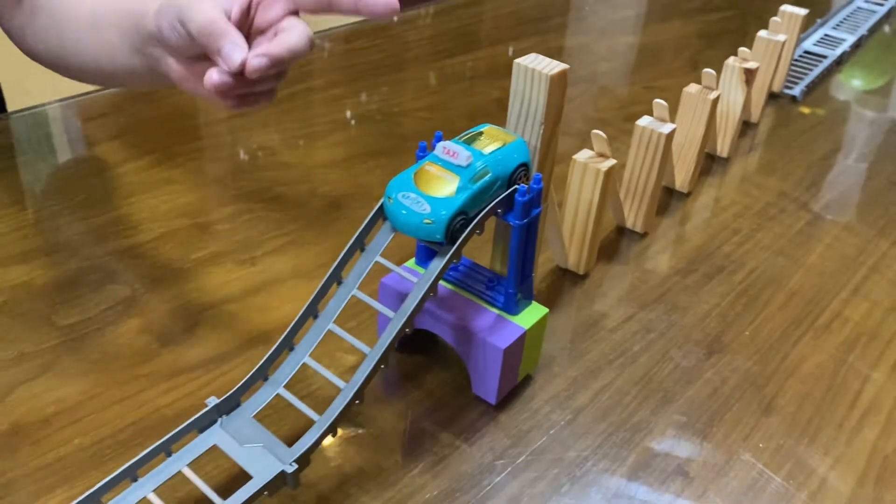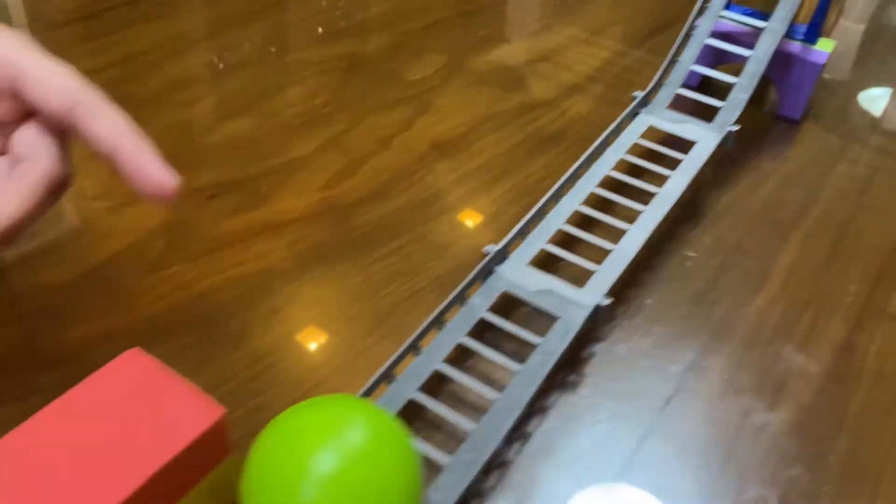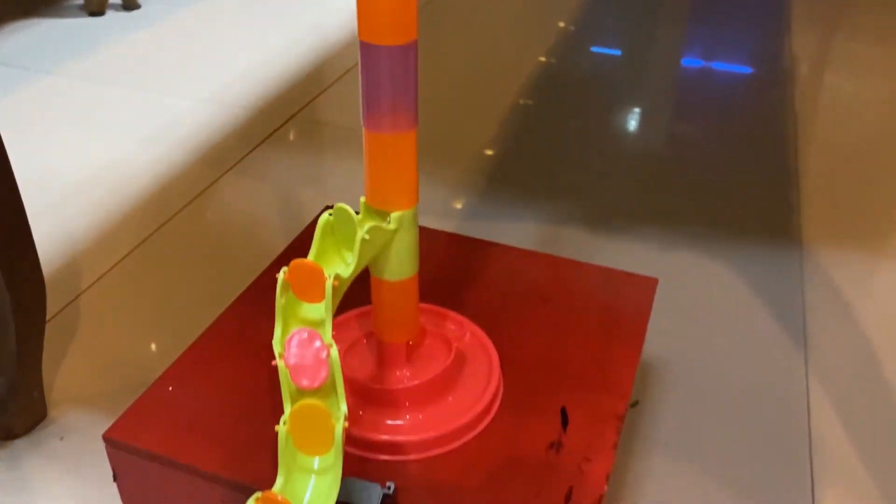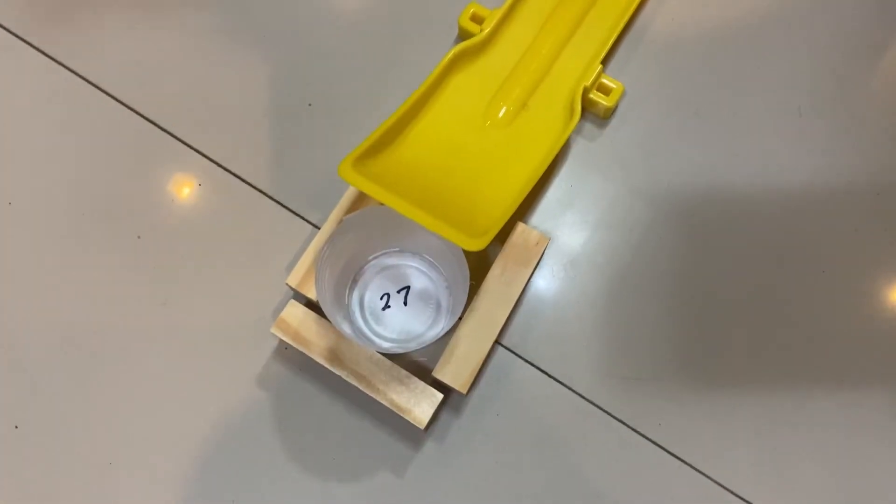The Jenga pieces will hit the car, go down the racetrack, hit the green ball, hit the yellow ball, go down here to the racetrack and onto the yellow slide and outside the Jenga pieces.